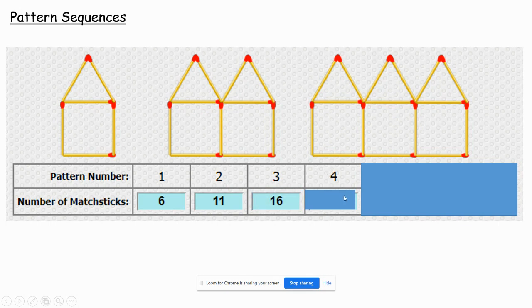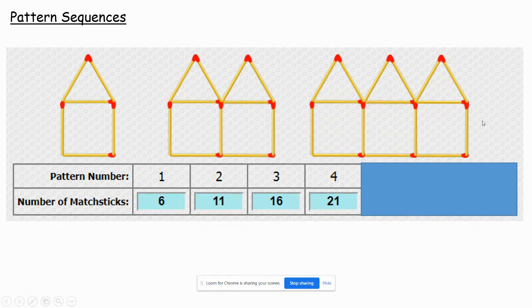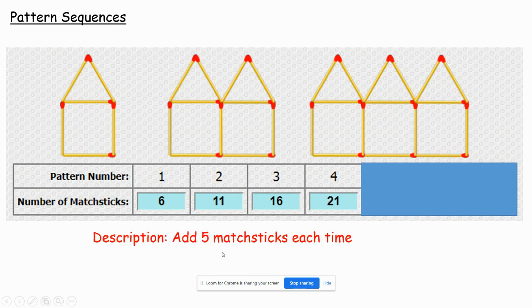Now it's asking us for the number of matchsticks in pattern 4. We haven't got pattern 4. We've got a choice. We could draw out pattern 4, or we could look at the numbers. Now whichever way you do it, you should get the same answer. But if we can do it from the numbers, it's going to be a little bit quicker. So it's in our best interest to do that. Let's look what's happening to the numbers. 6 to 11, add 5. 11 to 16, add another 5. So add another 5, you're going to get 21 matchsticks in pattern number 4. If you drew it out, you would get that same thing. Because you're drawing on an extra house, each house has got 6 matchsticks. But one of the lines for the house is already there. So that's why it's add 5 and not add 6. And if we want to describe that, we're going to add 5 matchsticks each time.